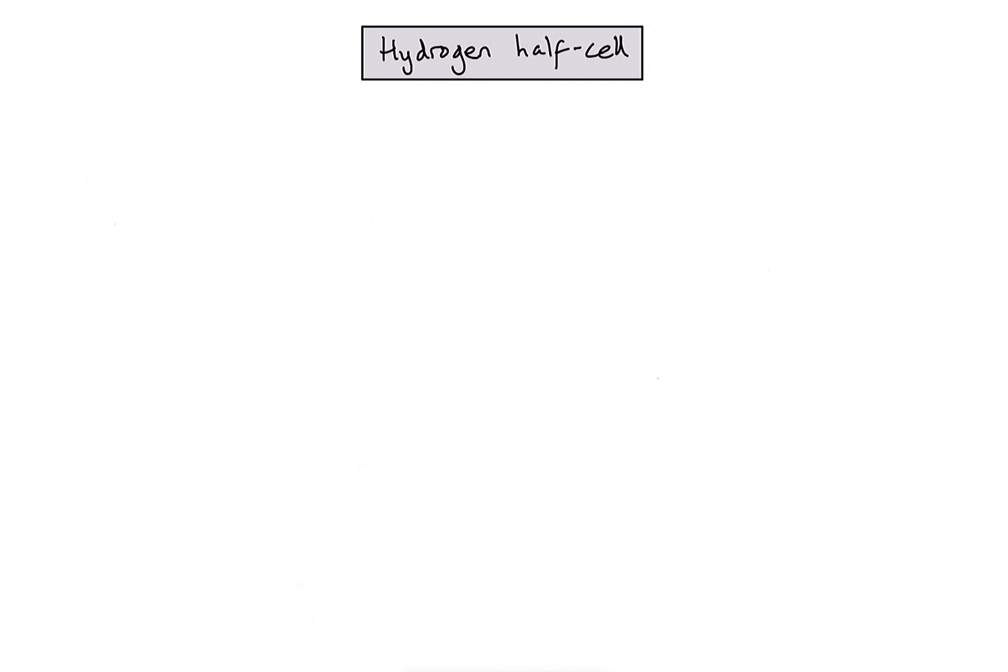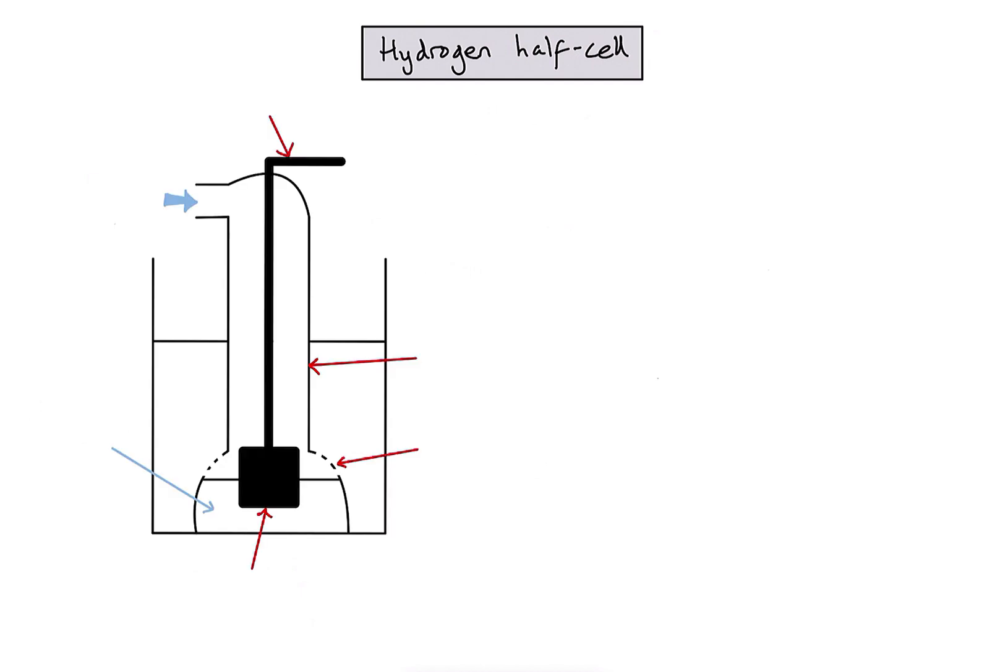First of all, let's draw a little diagram of the setup for the hydrogen half-cell. It looks a little bit funny. Normally, we've just got a piece of metal sitting in a solution containing ions of that same metal. However, hydrogen is a gas, so it's going to be a little bit more complicated. And first of all, we're interested in the redox process related to hydrogen gas.